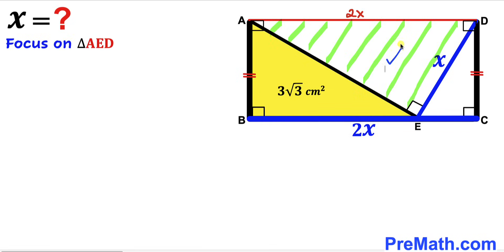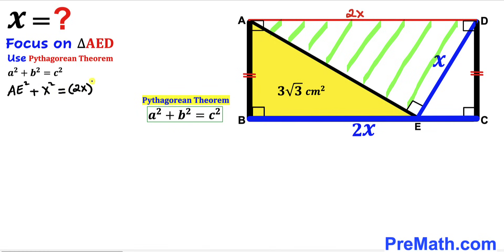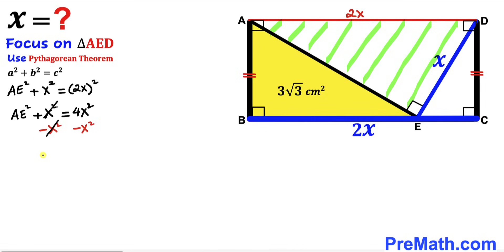Now let's focus on right triangle AED and apply the Pythagorean theorem: A² + B² = C². In our case, 2X is the hypotenuse, while X and AE are the two legs. So we write AE² + X² = (2X)². Subtracting X² from both sides gives AE² = 3X². Taking the square root of both sides, AE = X√3.